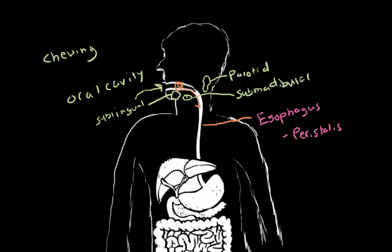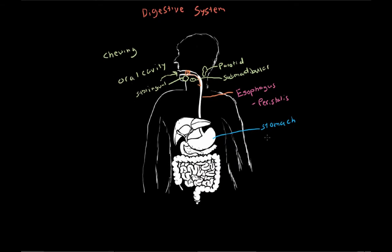The next part of the digestive system is the stomach, and the stomach is where a lot of the action starts to pick up. Inside the stomach, we're going to have a lot of different things being released. We'll have hydrochloric acid being released, and we'll also have pepsin. Pepsin assists in the breakdown of proteins. Hydrochloric acid, of course, is a very strong acid, so the pH inside the stomach is going to be around 1, which is extremely acidic.